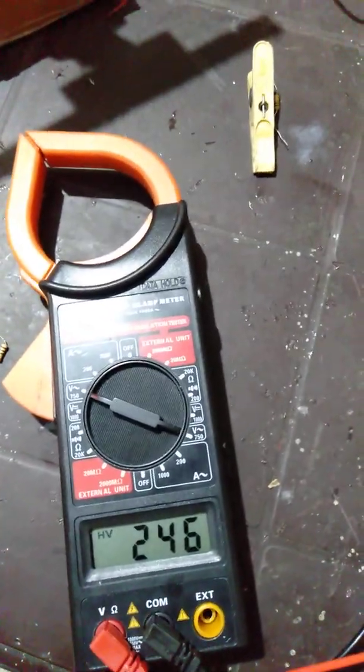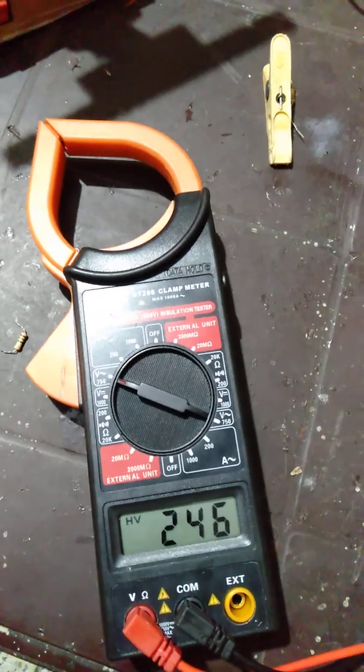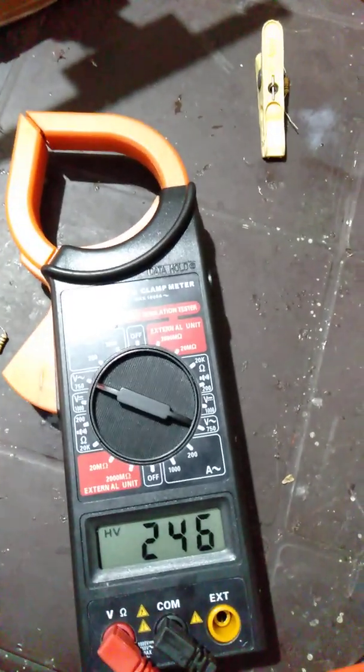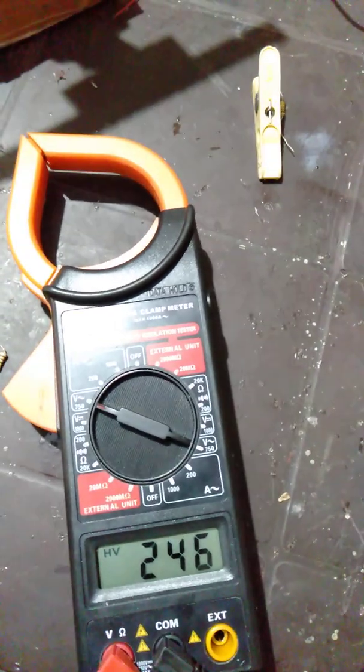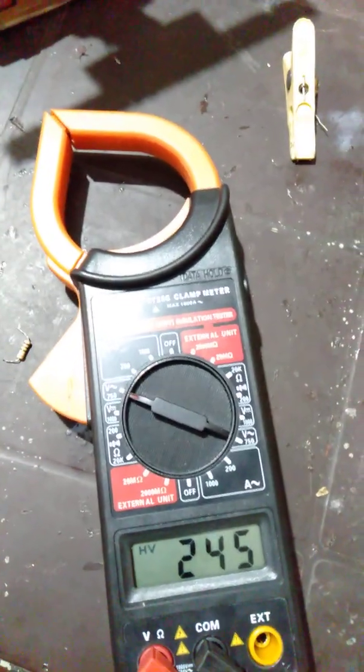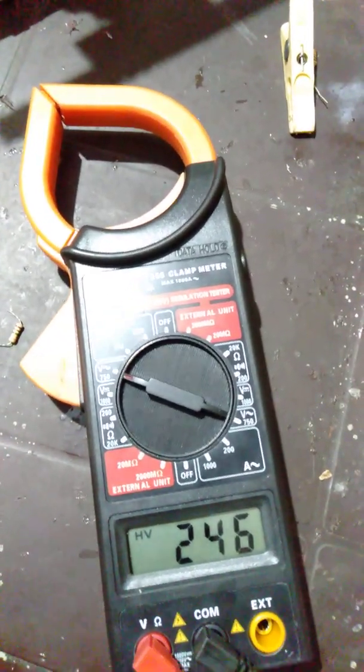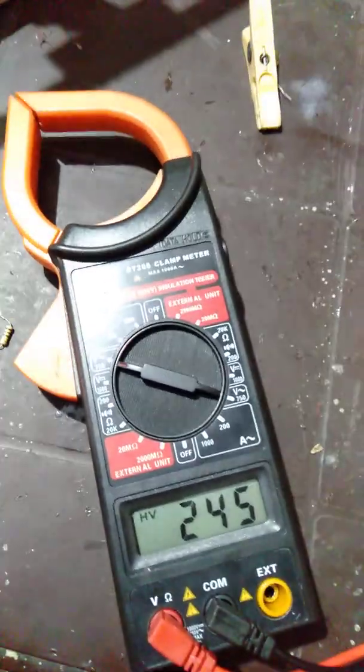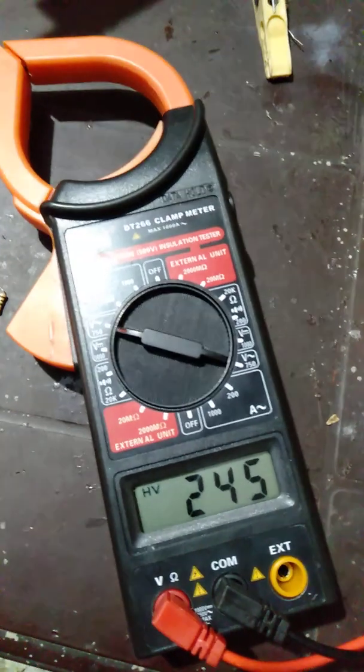It's showing a reading of 246 volts. Considering the voltage is around 240, this time it's a pretty significant amount of rise in voltage as it shows right here. Anyways, I'm going to overlook this for the sake that it is a cheap multimeter-type clamp meter.